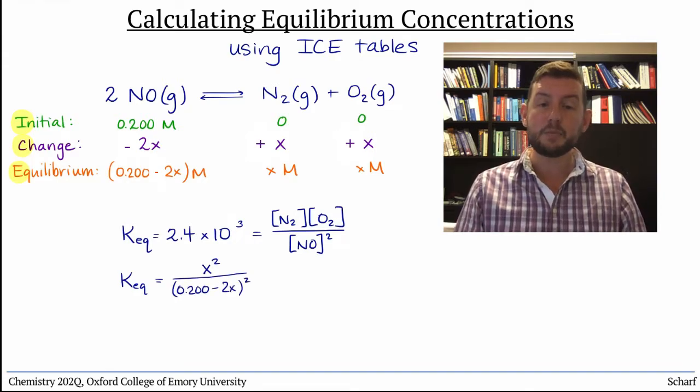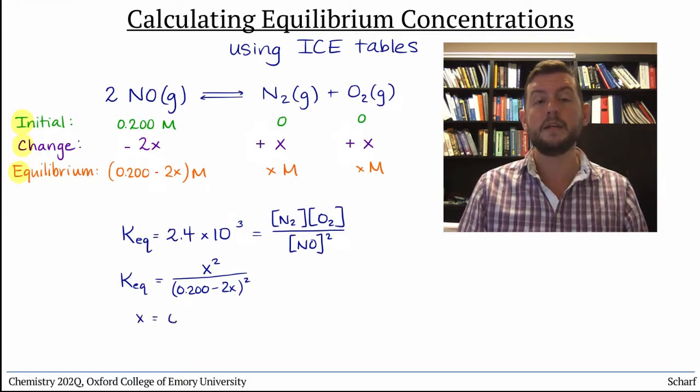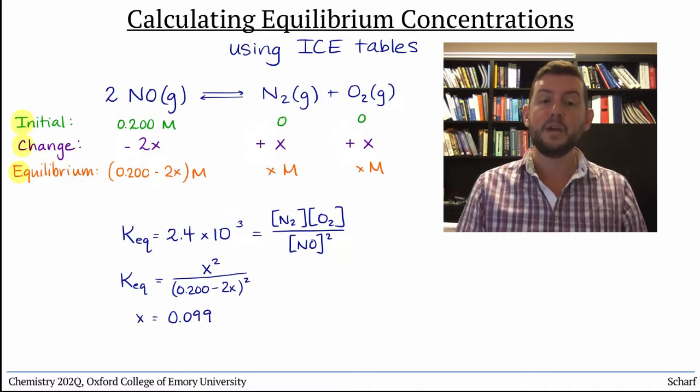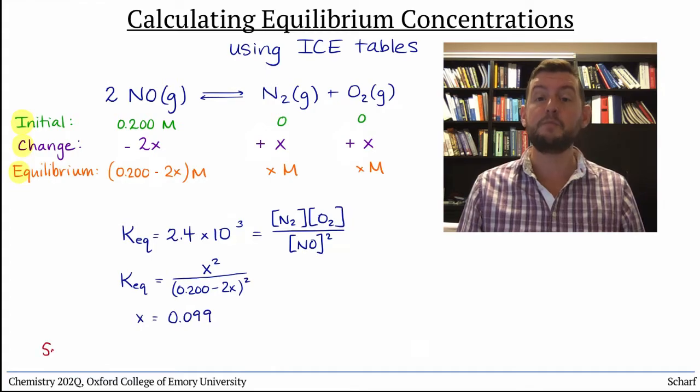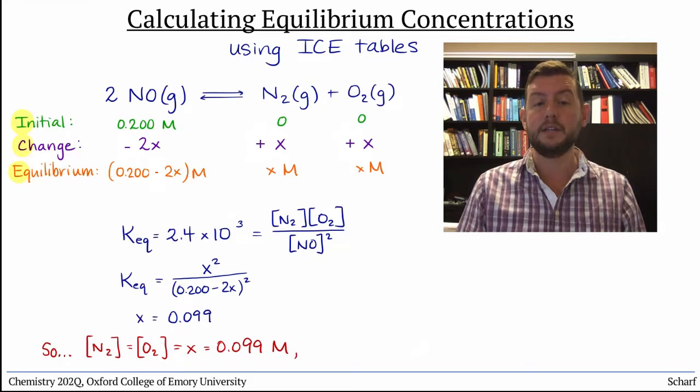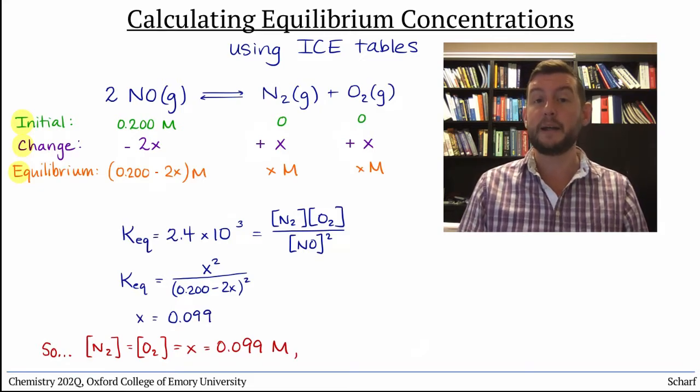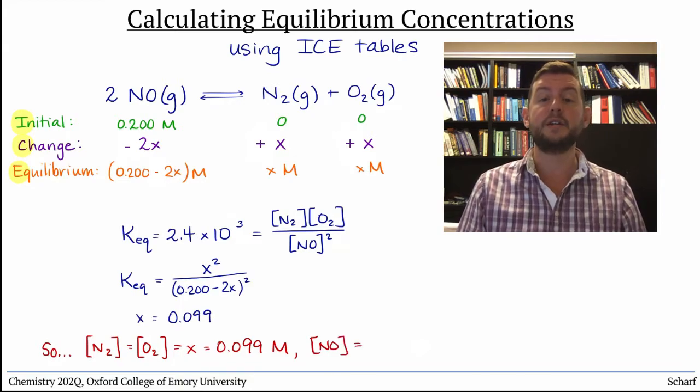With a little algebra, we can solve for x, which in this particular problem equals 0.099. We've solved for the equilibrium concentrations of both N2 and O2, and we can easily plug x into 0.200 minus 2x to determine the equilibrium concentration of the NO starting material.